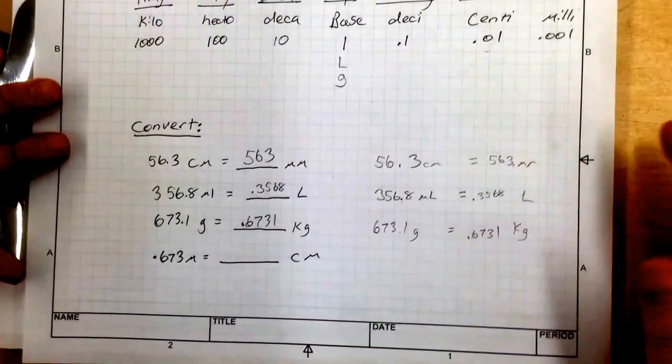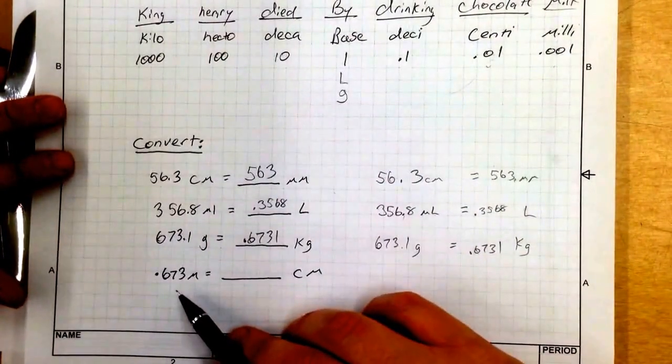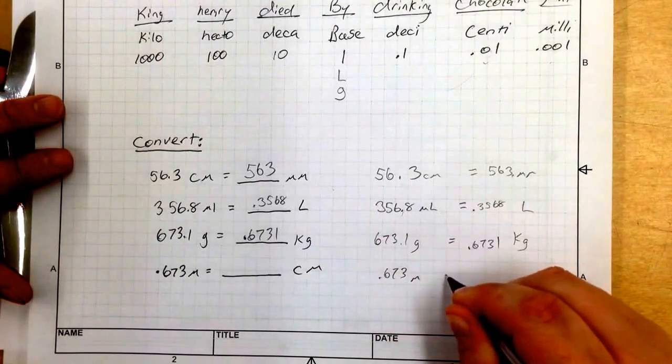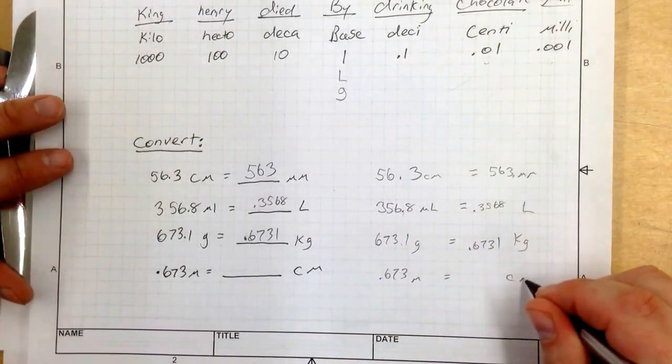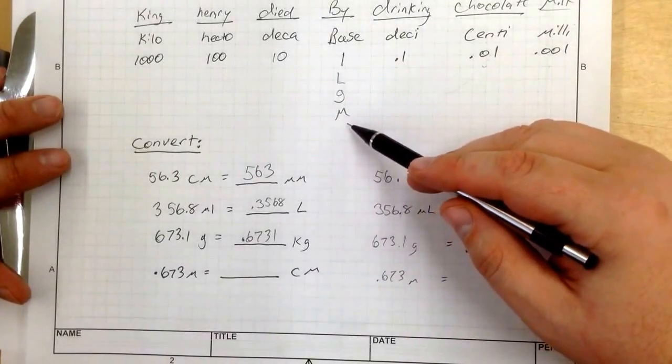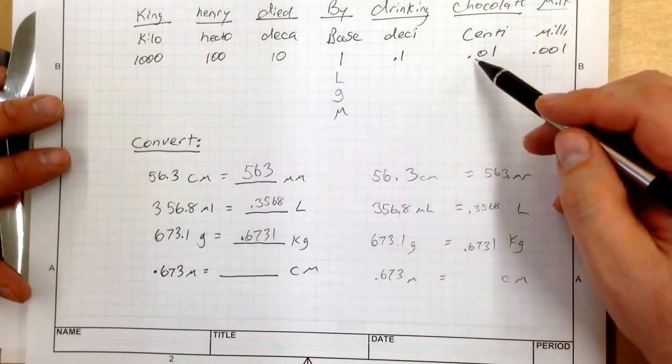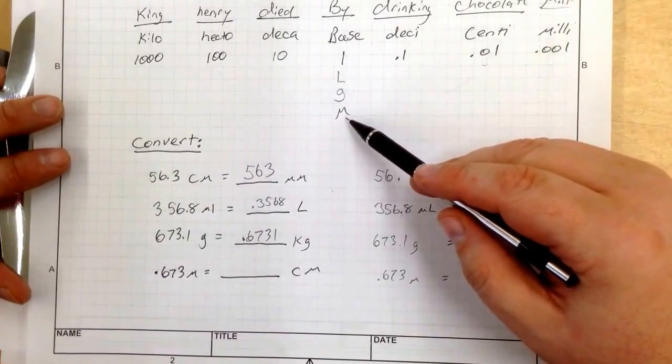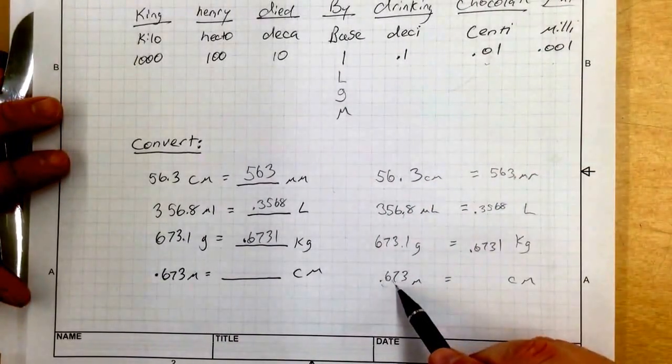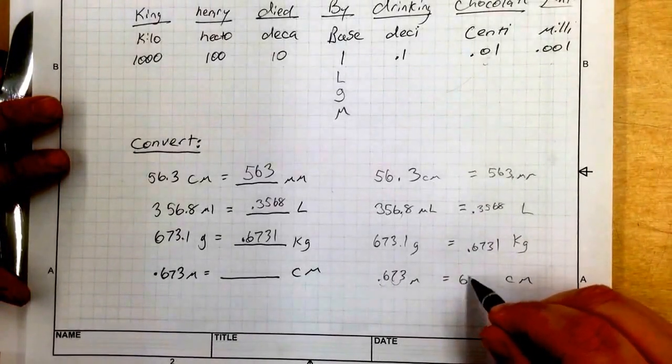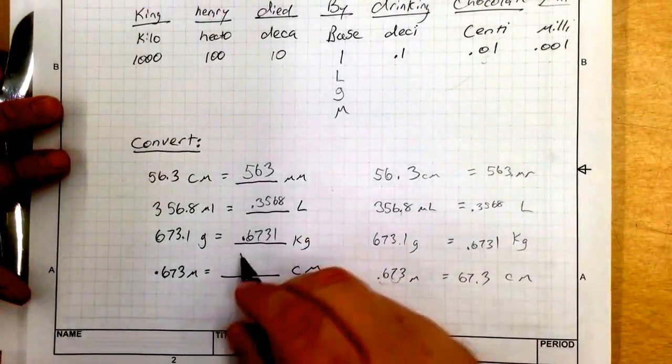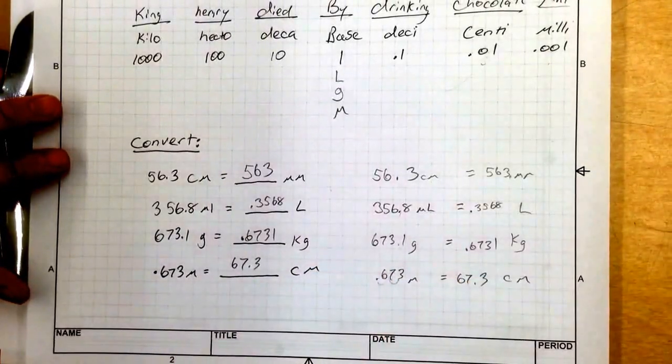Now the same thing with my meters. 0.673 meters equals how many centimeters? Meter is a base unit. So I've got my base unit right there. And I need to go to centimeters. And that's 2 units over. So that is 1, 2, or 67.3 centimeters.